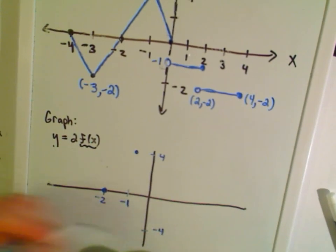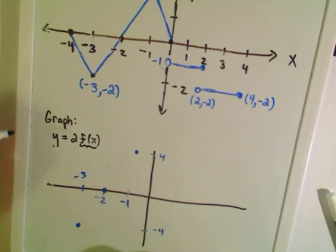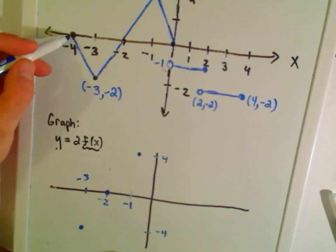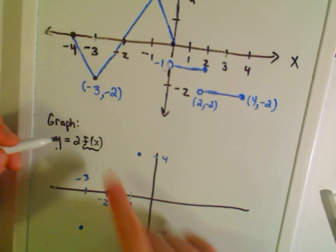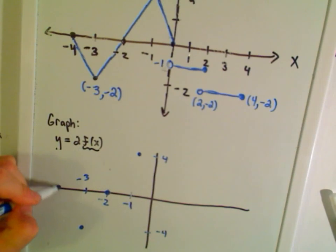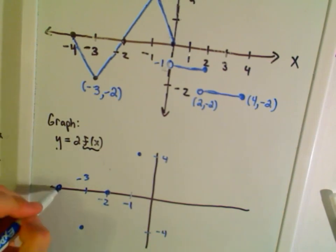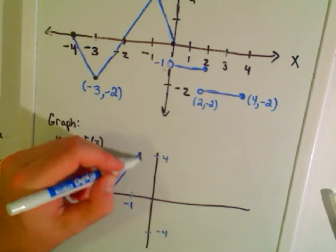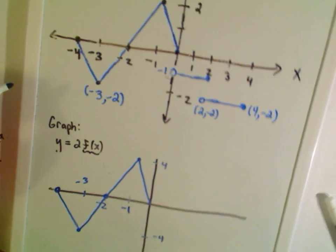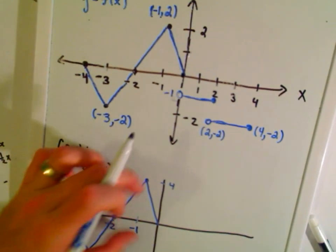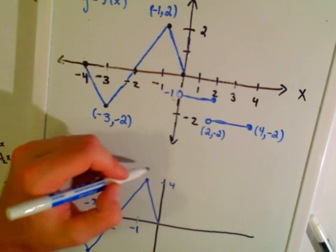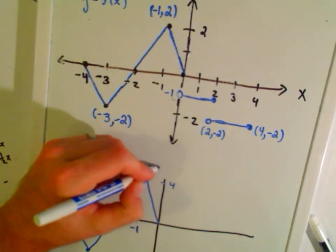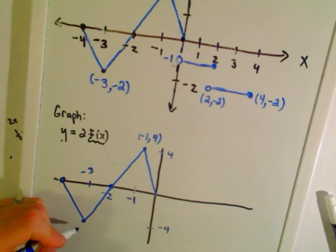At x = -4, the original y-coordinate is zero, so multiplying by two leaves it at zero. It still has that sawtooth shape. The y-coordinate is now at (-1, 4), and at the bottom left it's (-3, -4).